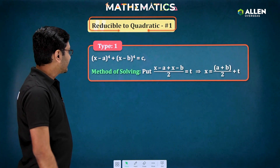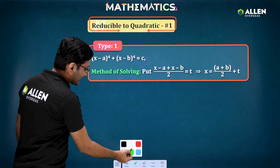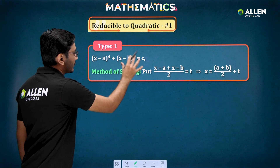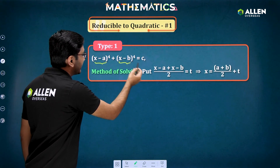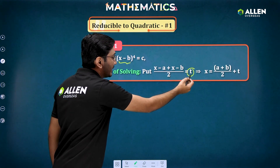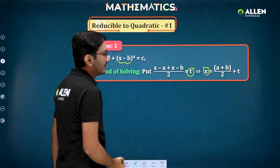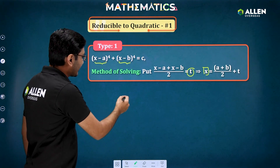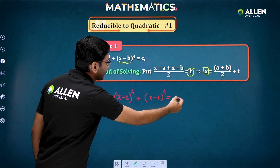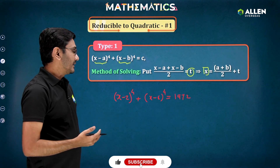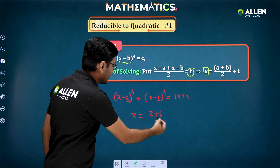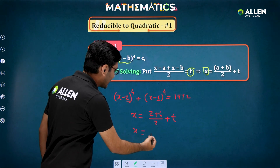Whenever you see an expression like (x - a)⁴ + (x - b)⁴ = c and want to find the values of x, the first step is to put (x - a + x - b)/2 as t. You're actually replacing x with (a + b)/2 + t. For example, if you come across x - 2 raised to 4 plus x - 6 raised to 4, you put x = (2 + 6)/2 + t, giving you x = 4 + t.